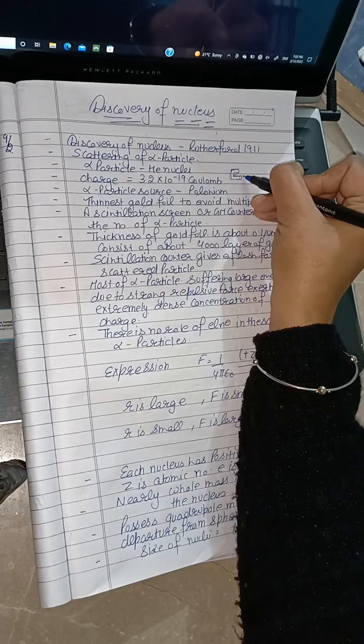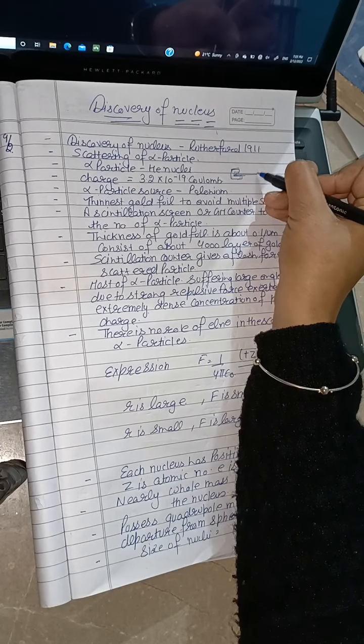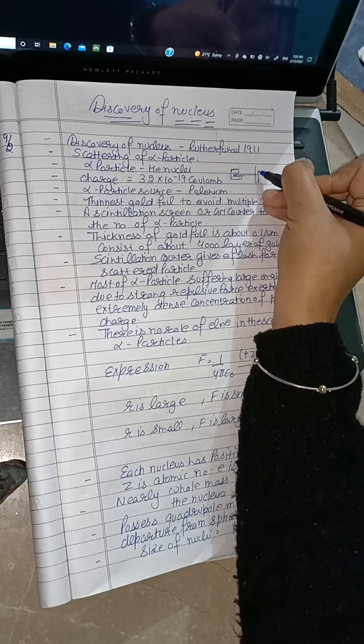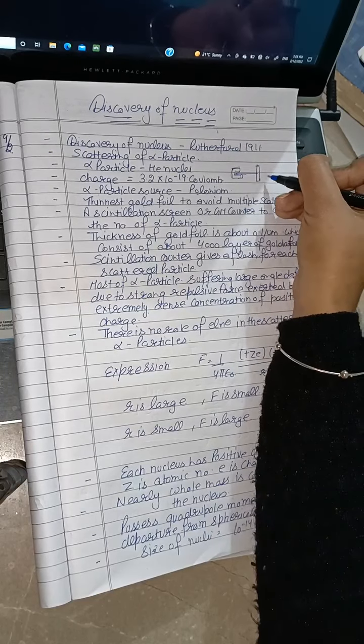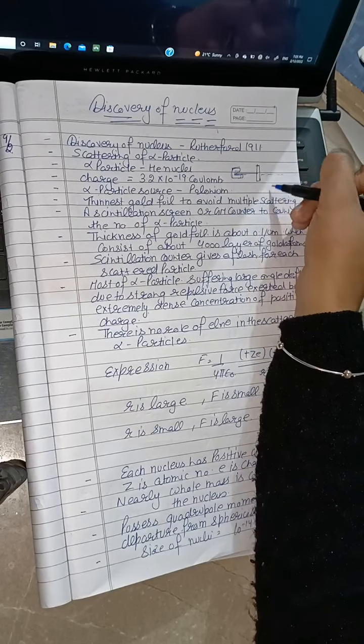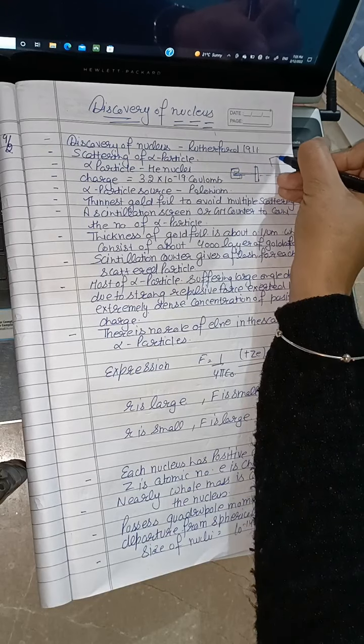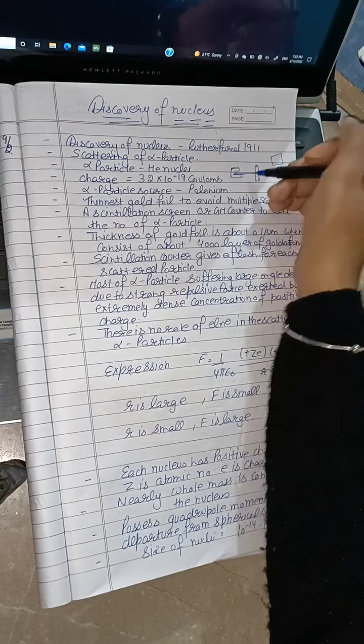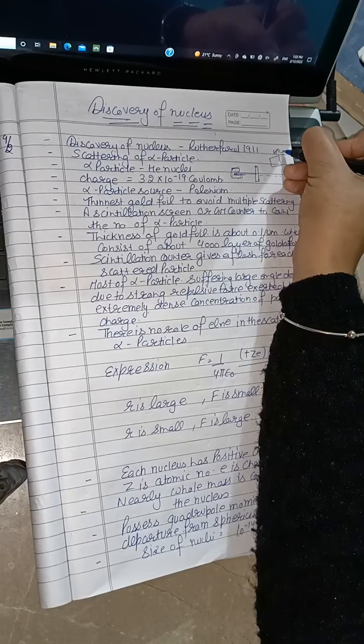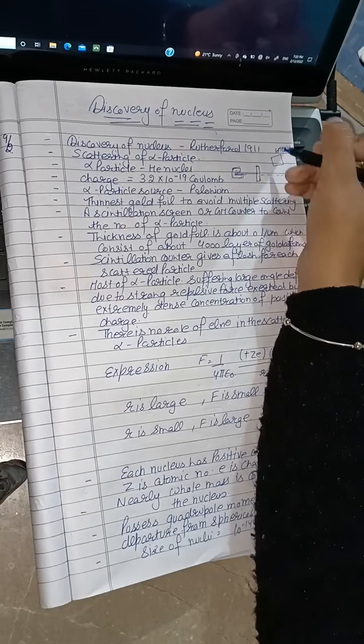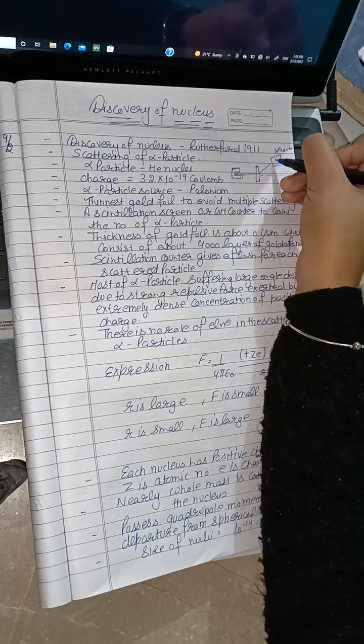Between the source of alpha particles and the gold foil, we observed that some alpha particles went straight without deflection, and here the GM counter or scintillation counter detected the alpha particles.